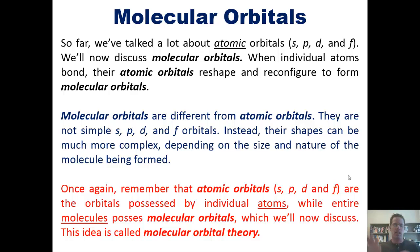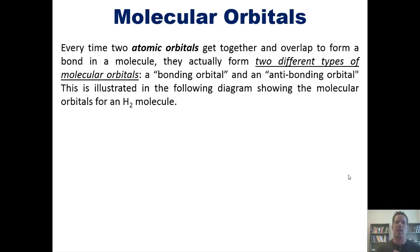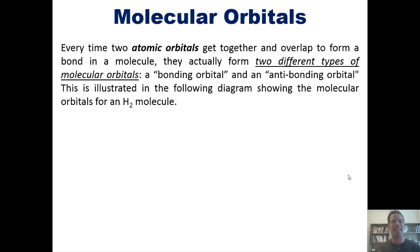This idea that individual atomic orbitals get together when they form molecules and bond together to form new molecular orbitals is called molecular orbital theory. Every time two atomic orbitals get together and overlap to form a bond in a molecule, they actually form two different types of molecular orbitals: one called a bonding orbital and another called an anti-bonding orbital.